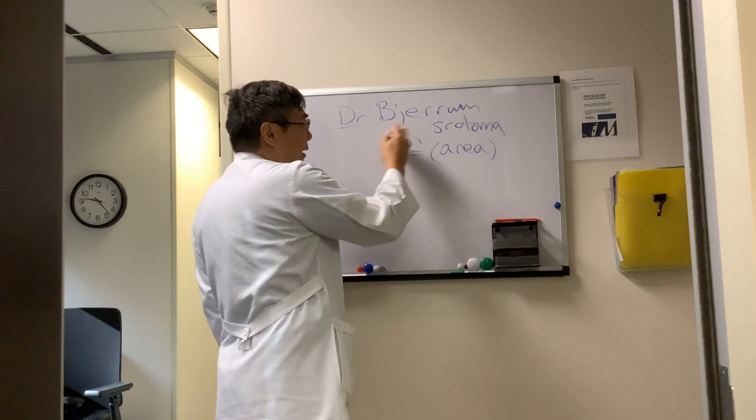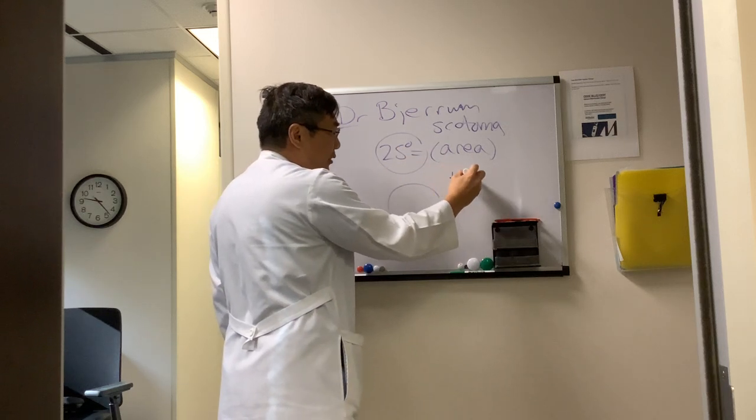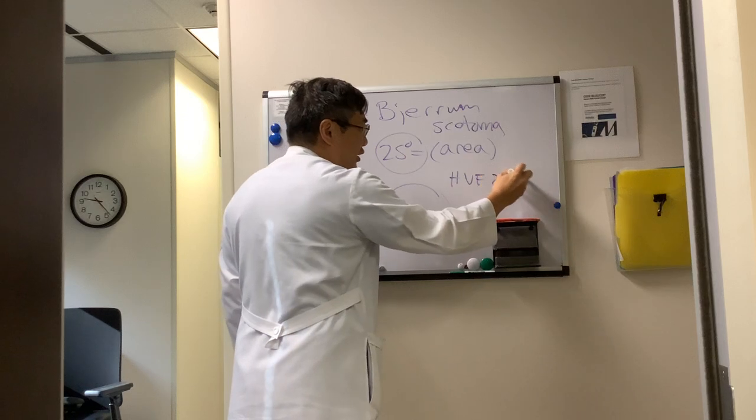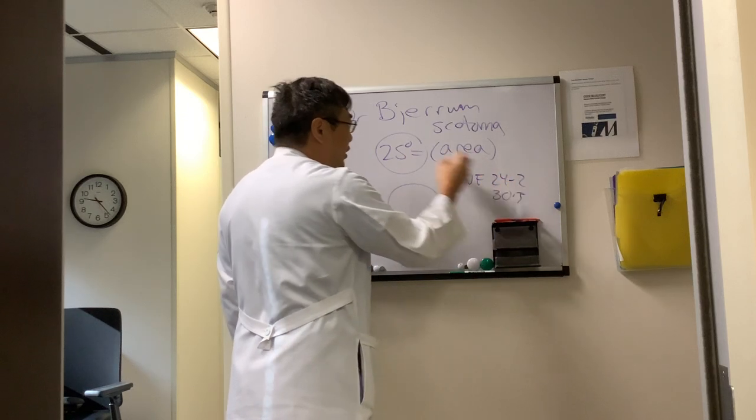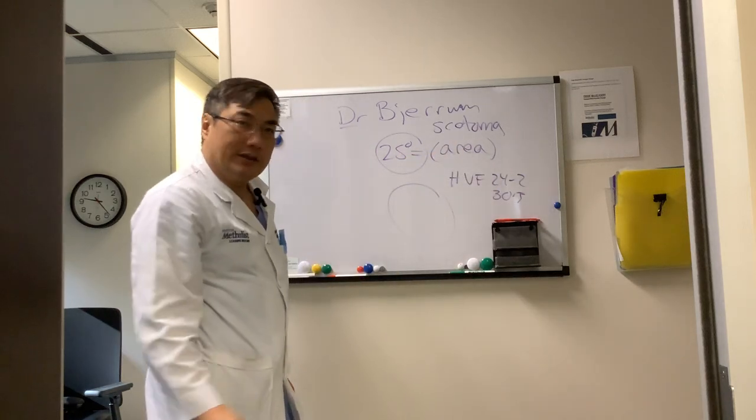The area is the central 25 degrees, and that's important because when we do the Humphrey visual field 24-2 or 30-2, you are testing that area because it's the central 30 or 24 degrees of field.